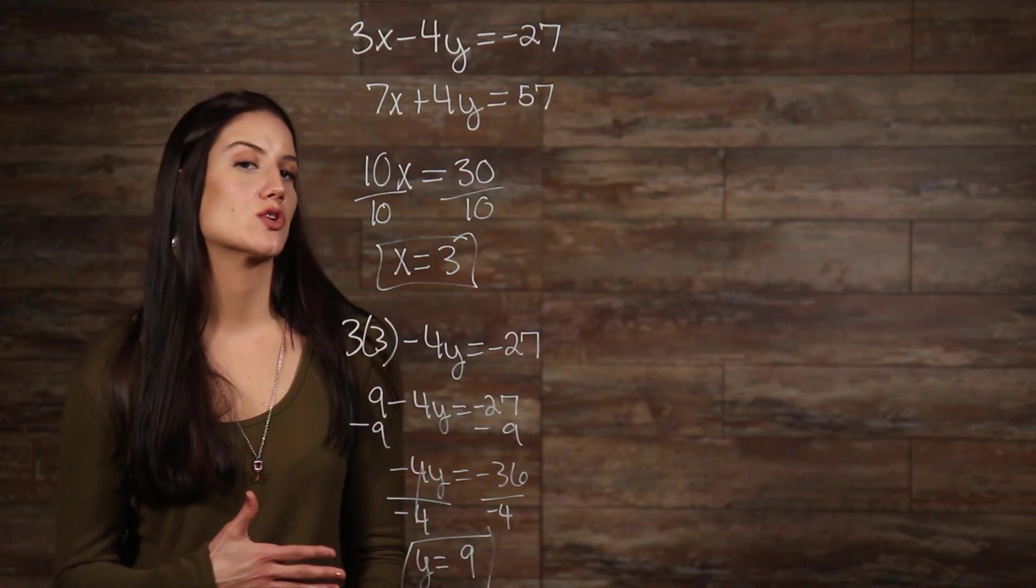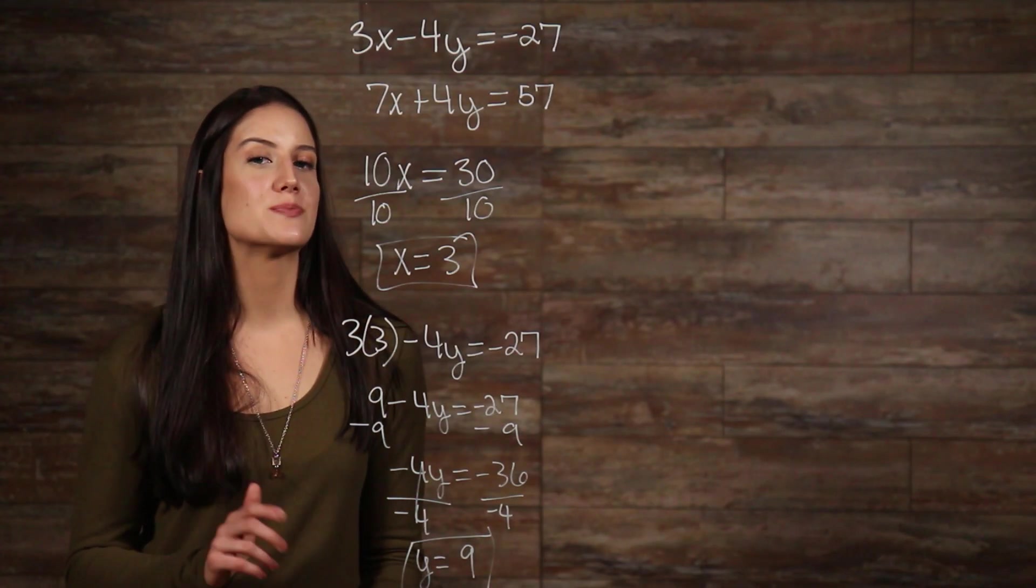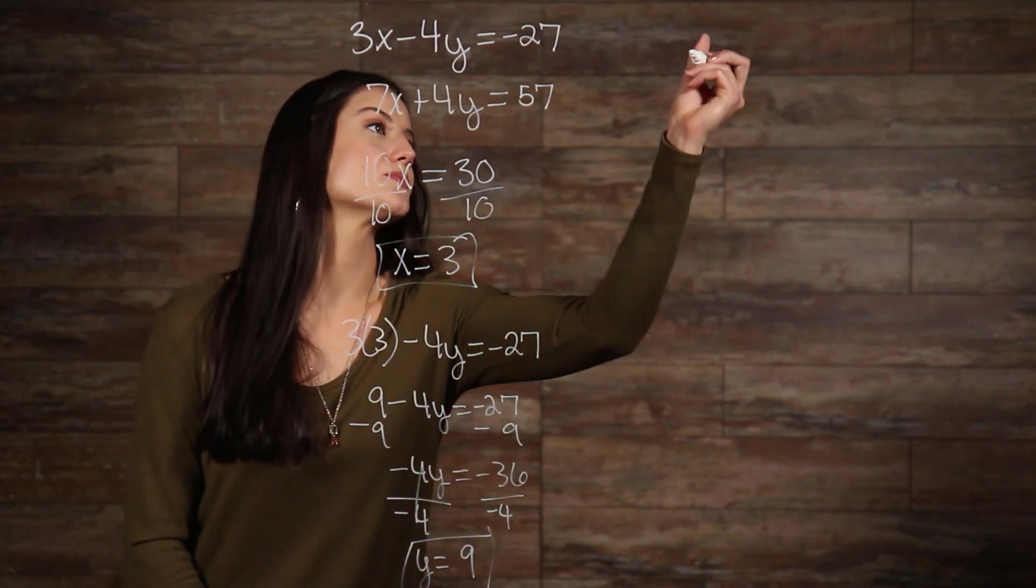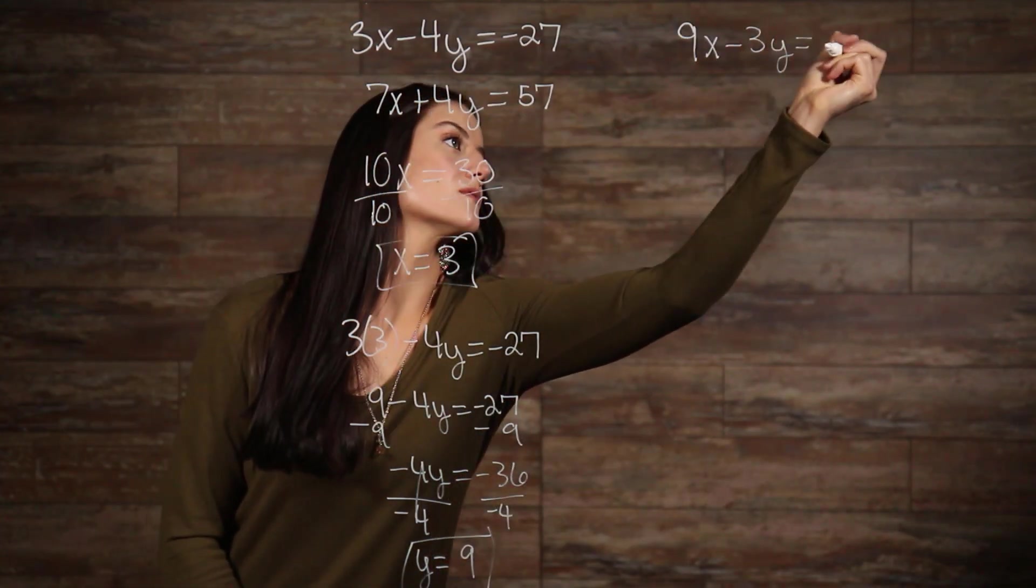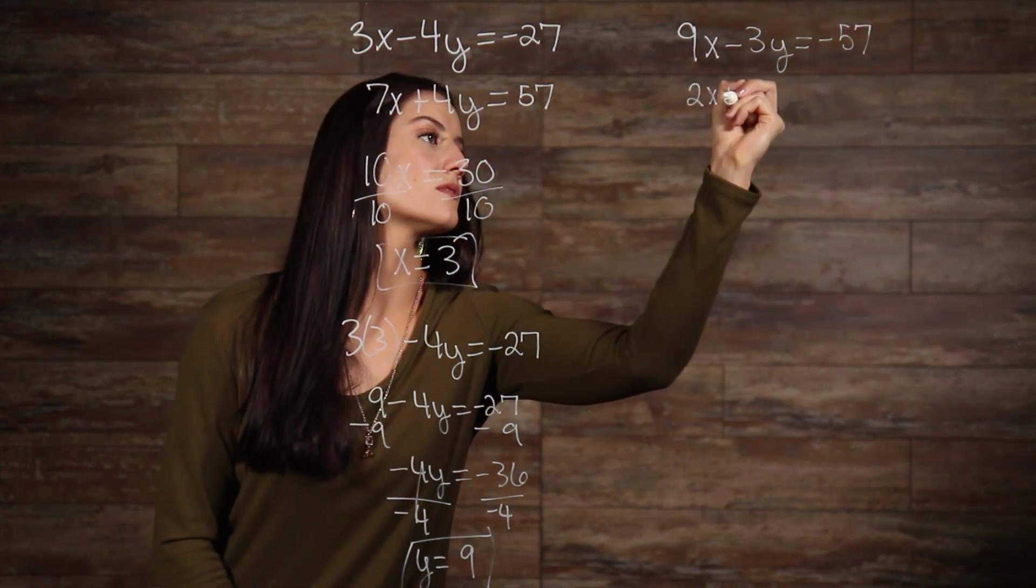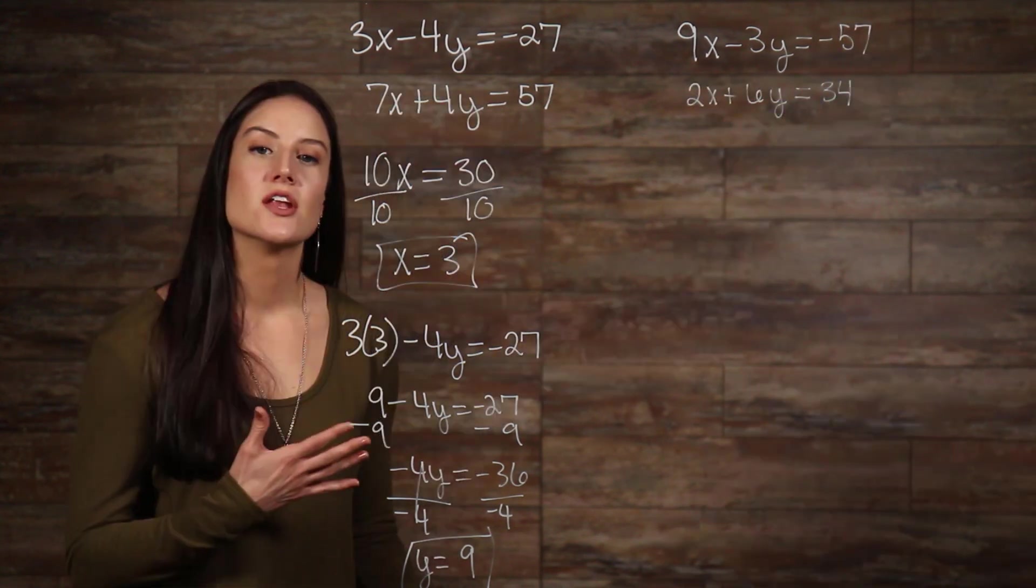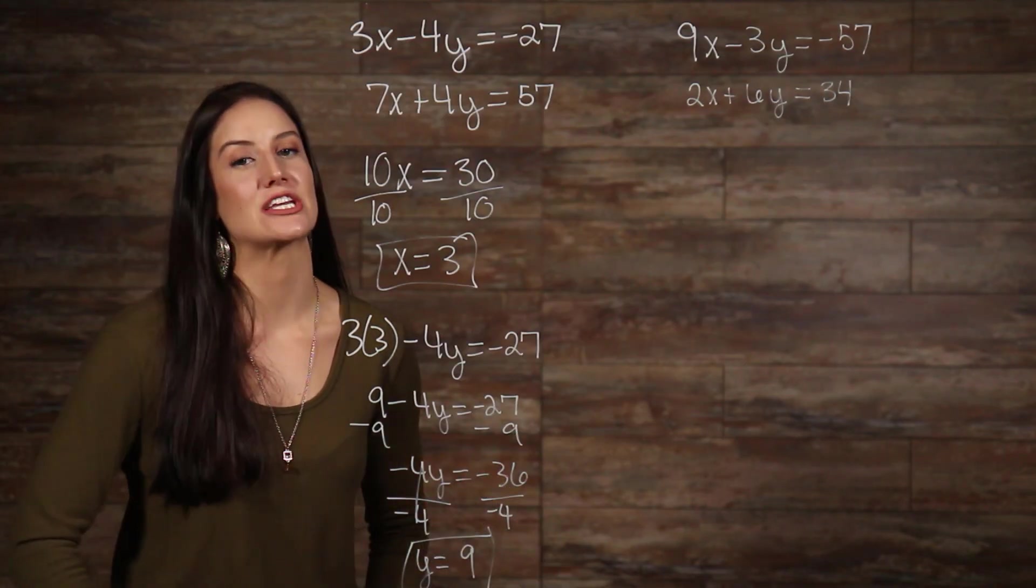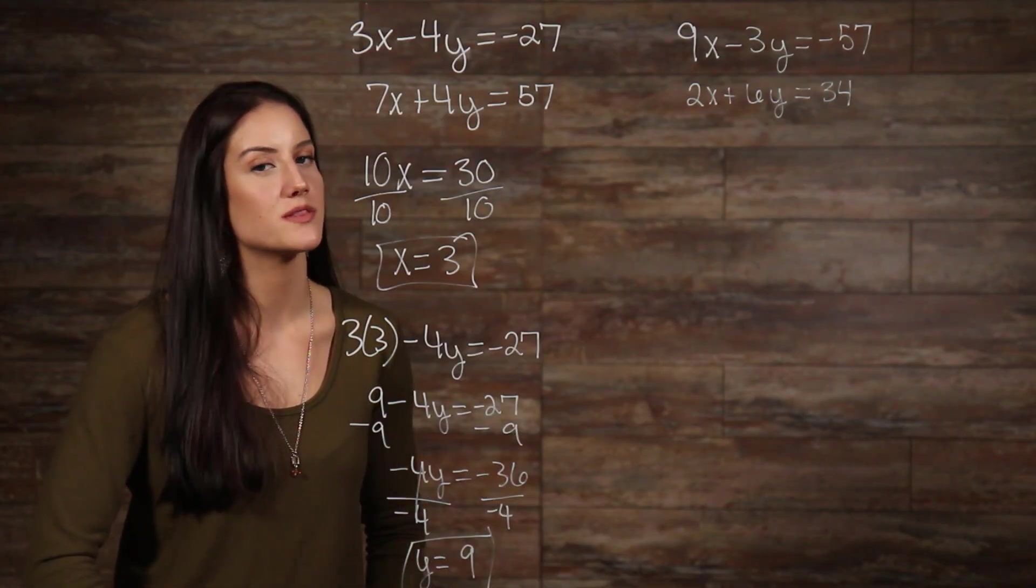That was a good example to learn how elimination works, but it may not always be that our terms cancel out so easily. Like in this example. None of our terms cancel out right off the bat. So, we'll need to do a little manipulation in order to get them to do what we want them to do.